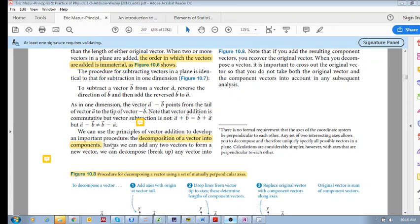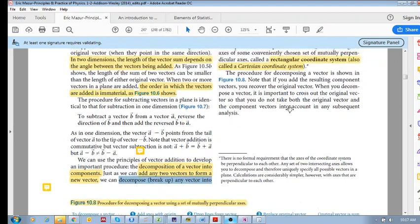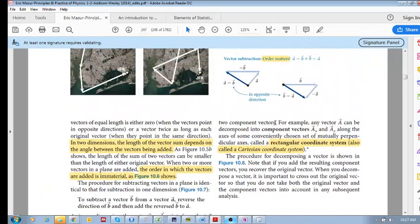So, what are the two things? We can either add any two vectors to form a new vector, that's the one thing, or we can decompose any vector into two component vectors. Do you see the two ideas?